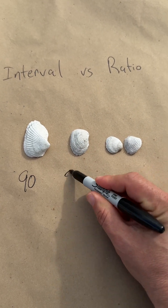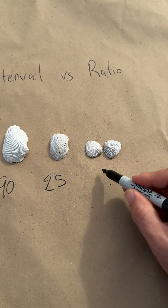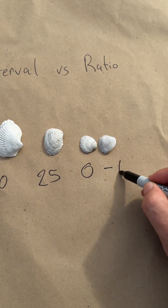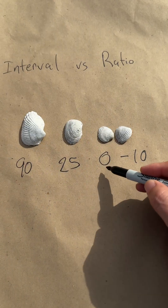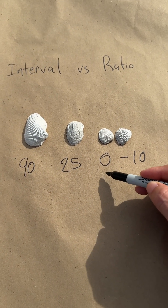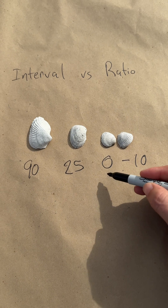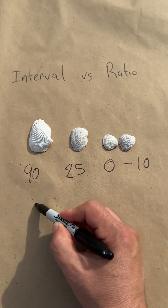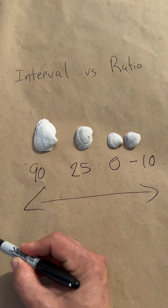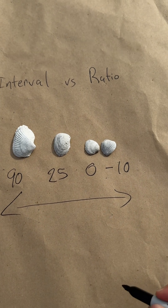Shell number two it was 25 degrees, and shell number three was zero, and shell number four it was negative 10. In this scenario, zero does not indicate the absence of any temperature. Rather, it's a value that is used on a scale from an infinite negative number to an infinite positive number.